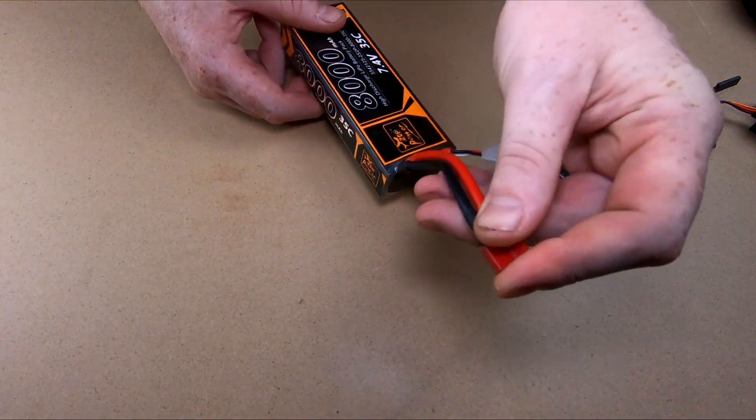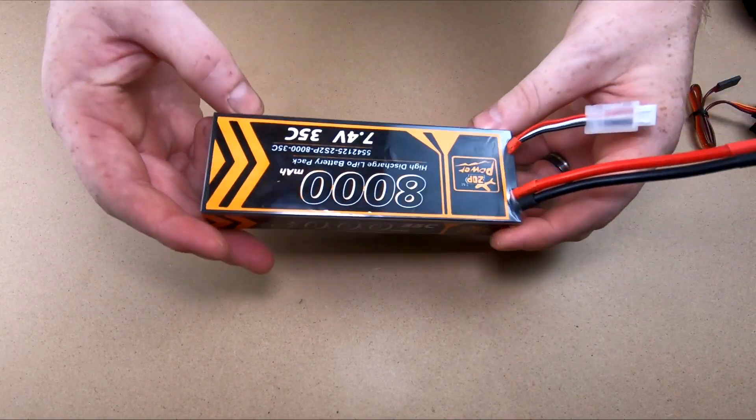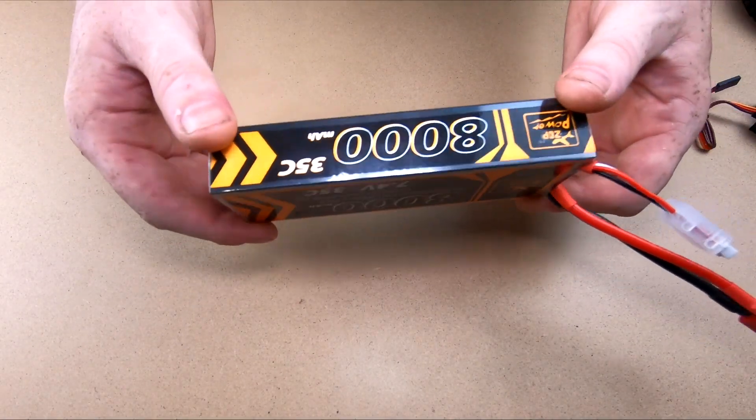So obviously we're going to change the Deans plug over to an XT60 as that's what we run on everything else. So let's get these plugs changed over and then get everything installed.